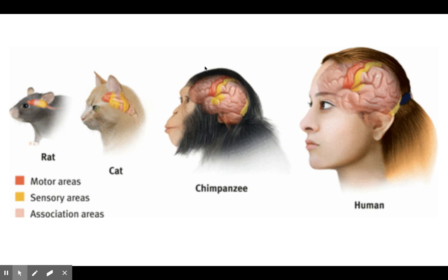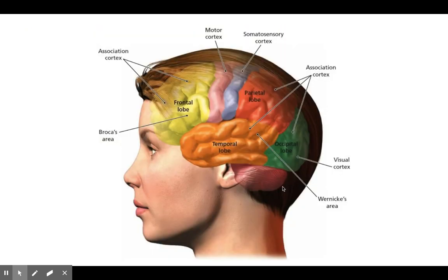A chimpanzee, our close relative, also has quite a few association areas but isn't as advanced as us — a little bit smaller. Then we have a cat, which doesn't have as much. And then we have a rat, which barely has any. So the brain has all these different parts — a million different parts going on — and everything has its own particular way of helping us.